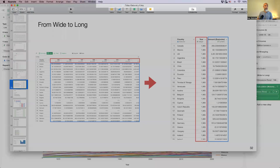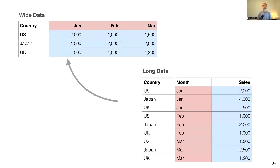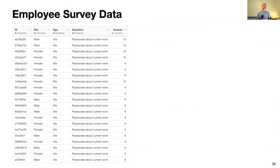Now the next item is transforming long data to wide data. It might seem weird since I've been saying to use long format, but there are cases where you want wide data. For example, here's typical survey data — you have a bunch of questions and people score them one to five. The data comes in with each row having an individual's ID, a question, and an answer. This looks like long data because more data just keeps growing downward.